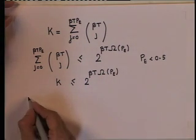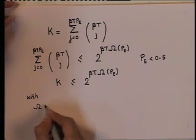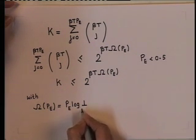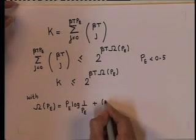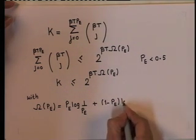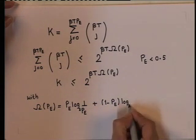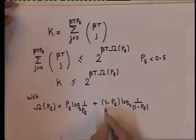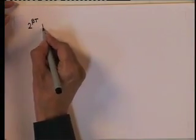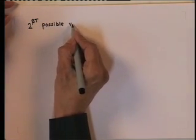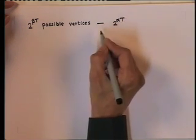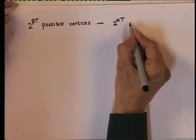Using this inequality, it follows that K is less than or equal to 2 to the power beta t times the entropy function, where the entropy function is given as P_e log(1/P_e) plus (1 minus P_e) log base 2 of (1/(1 minus P_e)). Now, from the 2 raised to beta times t possible vertices, we chose the 2 raised to alpha t vertices to be assigned to the super messages.